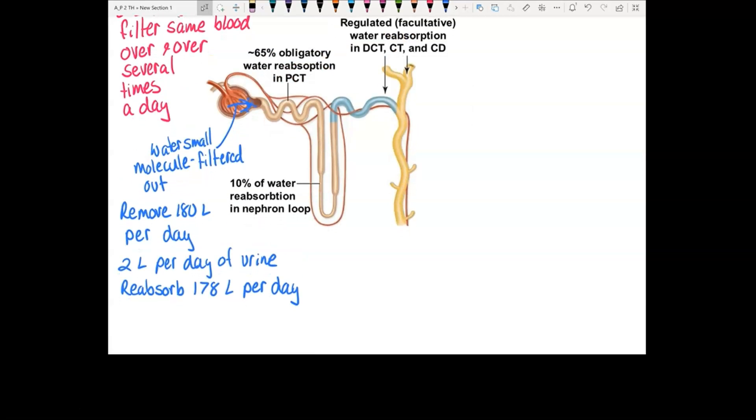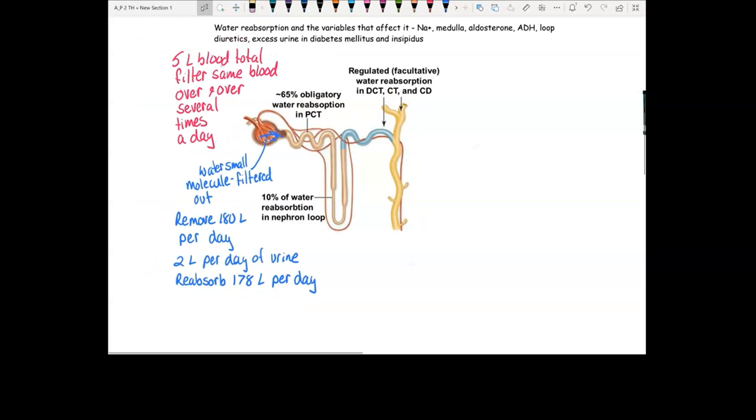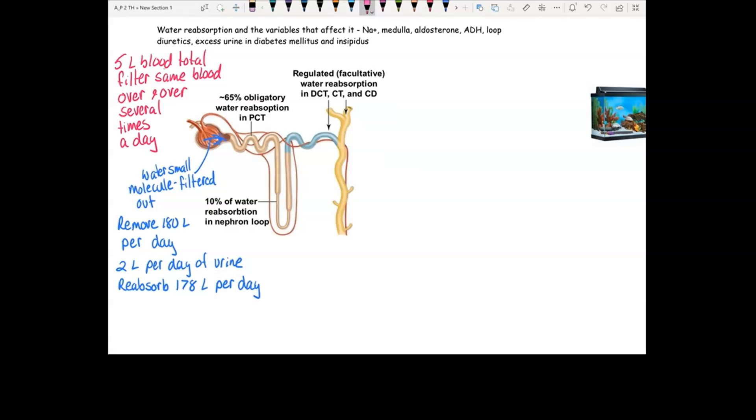You have three main processes that you're reabsorbing all this massive amount of water. Number one is the 65% obligatory water reabsorption in proximal convoluted tubule. This one is about sodium. Your proximal convoluted tubule reabsorbs sodium. Remember, water follows salt. The water follows the sodium. So 65% of that 178 liters that you're reabsorbing is following sodium back into your blood through the proximal convoluted tubule.